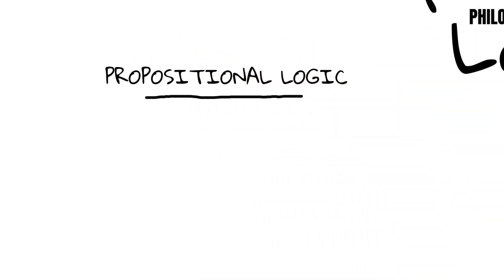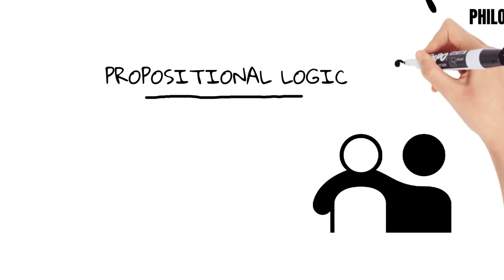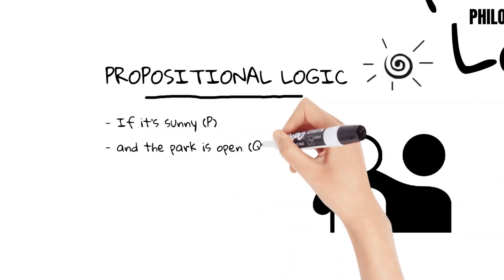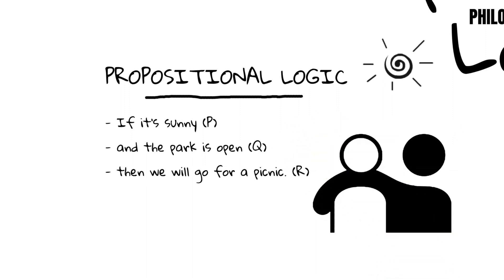Propositional logic is like the backbone of a decision-making process. Think about making plans with your friends. You might say, if it's sunny, proposition P, and the park is open, proposition Q, then we will go for a picnic, a new proposition we could call R. In this scenario, the statement we will go for a picnic, R, is only true if both it's sunny, P, and the park is open, Q, are true. If either of these conditions aren't met, then the whole proposition, R, is not true, and you probably need a new plan for your day.